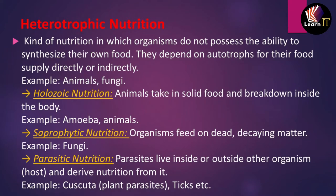The heterotrophic mode of nutrition is a kind of nutrition in which organisms do not possess the ability to synthesize their own food. They depend on autotrophs — organisms which prepare their own food — for their food supply, directly or indirectly. This basically means an organism which depends on other organisms for food, and the dependency can be animals to plants or animals to animals.